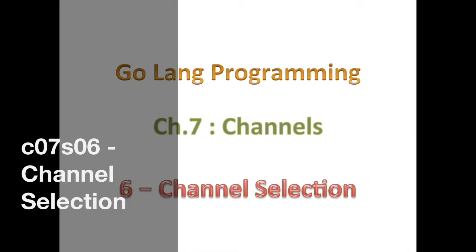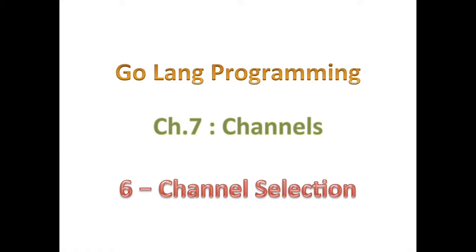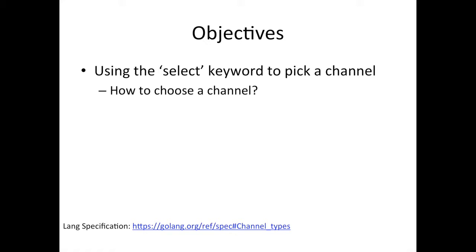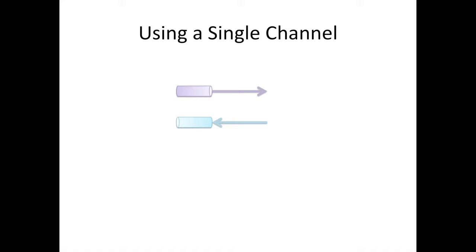Hello, good day and welcome back. We're going to keep talking about Go channels, and in this section we're going to look at channel selection. It won't make a lot of sense right now, but I'm trying to walk you through it and ease you into it. We're going to be using the select keyword to pick or choose a channel. With a single channel, whether for reading or sending, it's pretty simple — you try to write something on it, and if the other side can receive it, it receives it. If not, you're blocked.